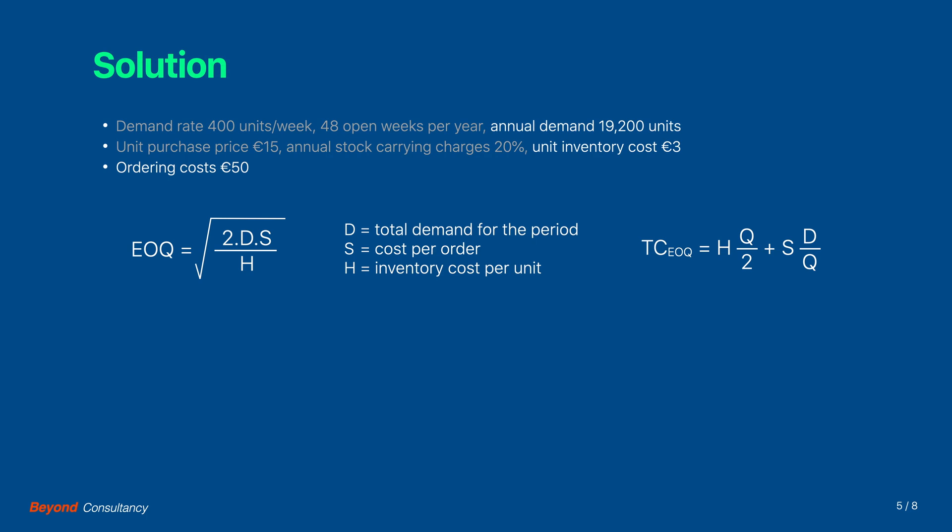The total demand for the year is 19,200, namely 48 weeks times 400 units per week. The inventory cost is 3 euro per unit, which is derived from the 20 percent carrying charge over the 15 euro purchasing price.